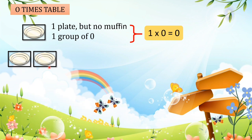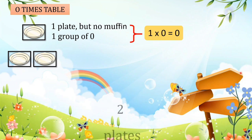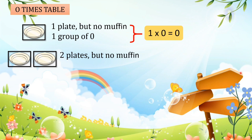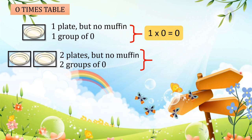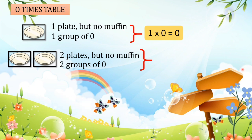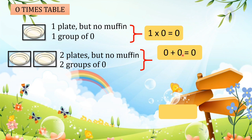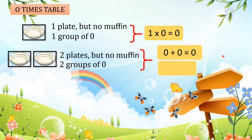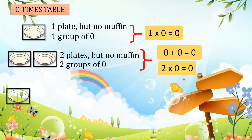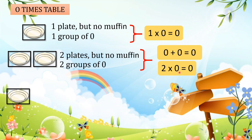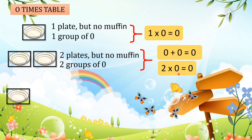Here again we have two plates, but there is no muffin inside. We still have two groups of zero. What is the answer? Zero plus zero equals zero. Or we can say two times zero equals zero, because there is no muffin in the plates. So the answer is zero.